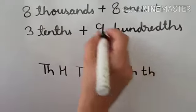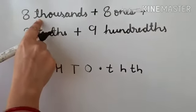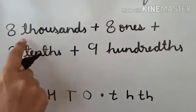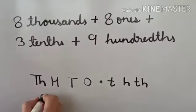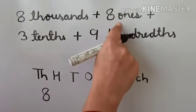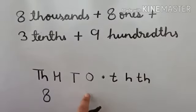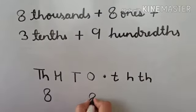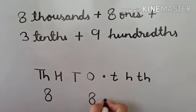Here we have 8 thousands, so we write 8 at thousandth place. Then we have 8 ones, so we write 8 at ones place. Then decimal point.